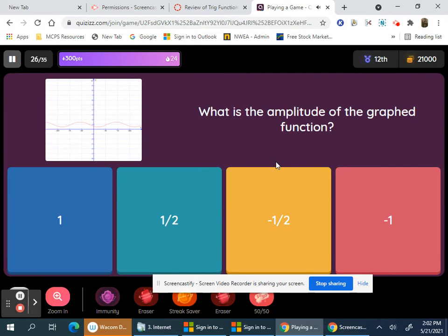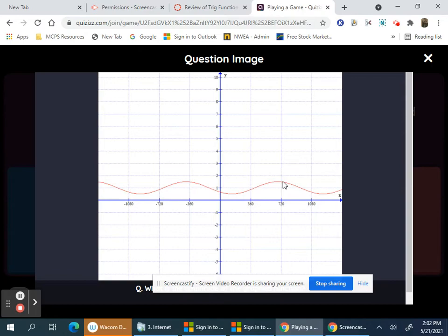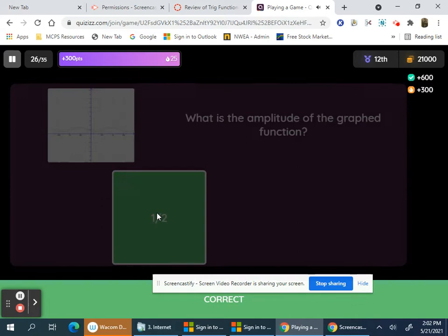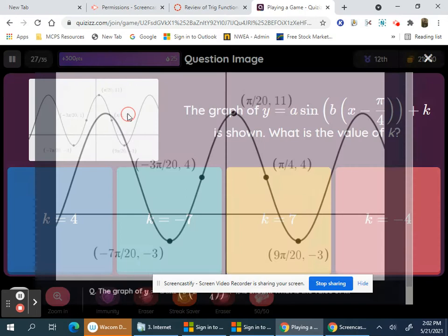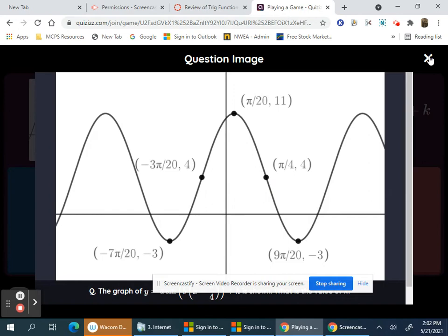That's the amplitude. The center line is 1, so the amplitude is 1 half. What's the value of k, the center line of this graph? That's y equals 4, or 4.